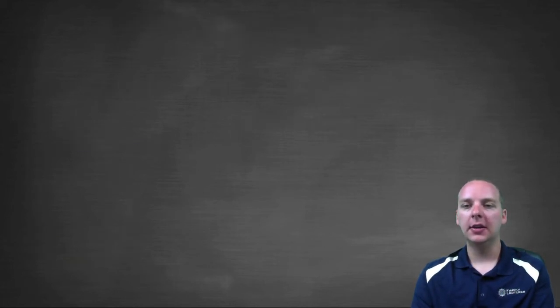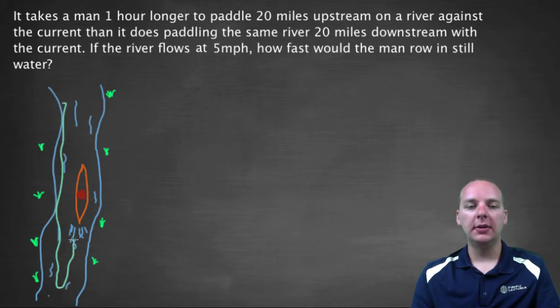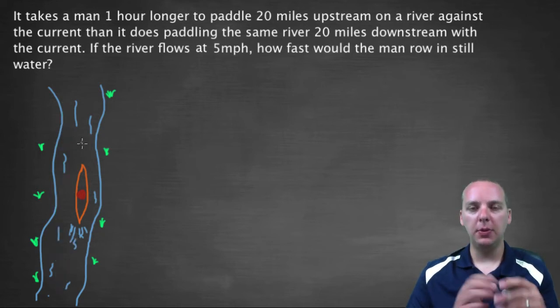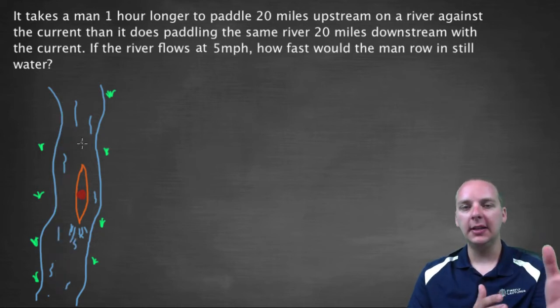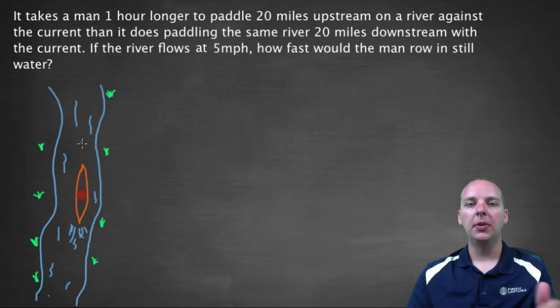So I'm going to show you how to do that with an example. So let's take a look at an example right now. Alright, so here's a very typical type of example. This is a man who's paddling on a river. He's going down the river, and then he's coming back up the river. You'll also see examples with people going on trips to a city and then coming back. It could be anything.